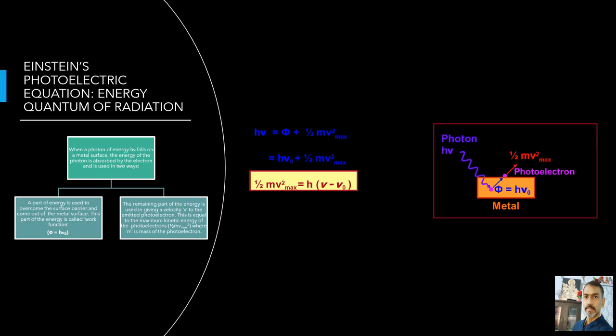Albert Einstein proposed that radiation energy is built up of discrete units, the so-called quanta of energy of radiation. Each quantum of radiant energy has energy h nu, where h is Planck's constant and nu the frequency of light. In photoelectric effect, an electron absorbs the quantum of energy h nu of radiation. If this quantum of energy absorbed exceeds the minimum energy needed for the electron to escape from the metal surface, work function phi nought, the electron is emitted with maximum kinetic energy k max that is equal to h nu minus phi nought.